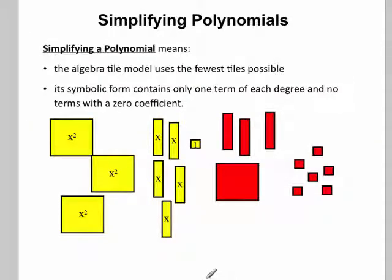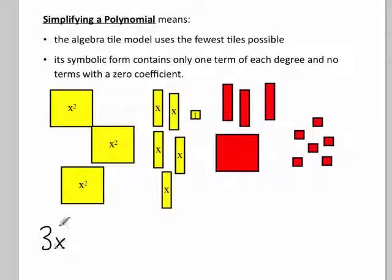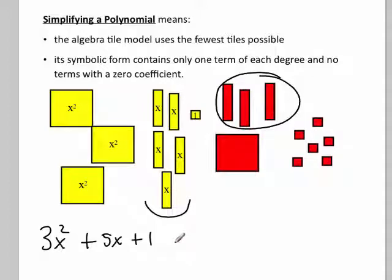Now we're going to use like terms to simplify polynomials. Start by looking at the set of algebra tiles I have here. And I'm going to just write out algebraically what I have. I have three x squared blocks. I have five positive x strips. I have a positive one block. I have three negative x strips, so that would be plus negative three x or minus three x, same thing. I have a negative x squared block, so plus negative x squared or minus x squared more simply. And I have six negative one blocks. So symbolically this is what I have in terms of the picture.